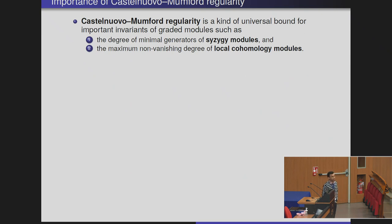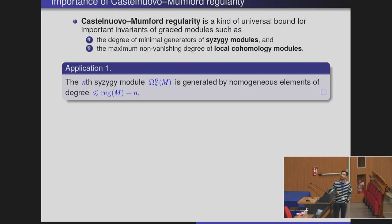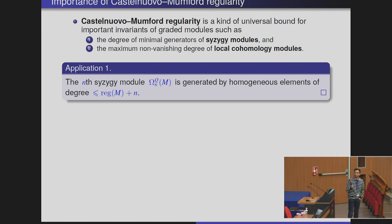Let me first say a few words about this invariant. What is Castelnuovo-Mumford regularity? It is a kind of universal bound for important invariants such as the degree of minimal generators of syzygy modules and the maximum non-vanishing degree of local cohomology modules. The n-th syzygy module of a finitely generated graded module over a polynomial ring is generated by homogeneous elements of degree at most regularity of M plus n. One can define the regularity of M by taking the minimum possible such bound — it is the minimum of all integers m such that the n-th syzygy module of M is generated by homogeneous elements of degree at most m plus n, for all n.